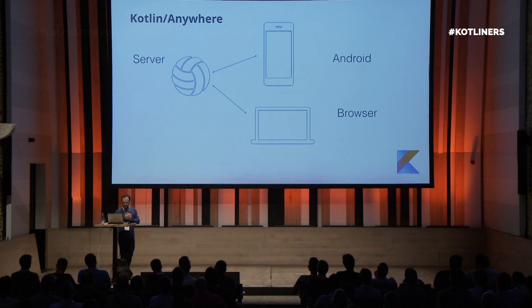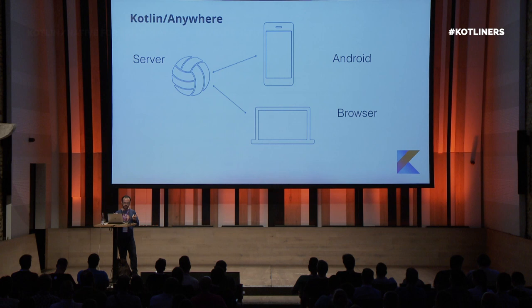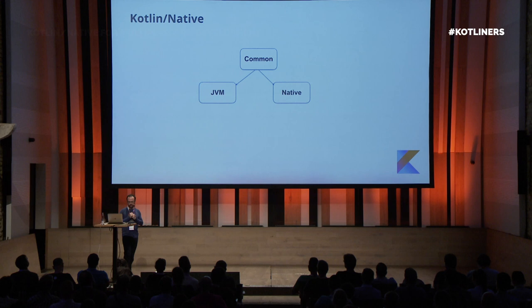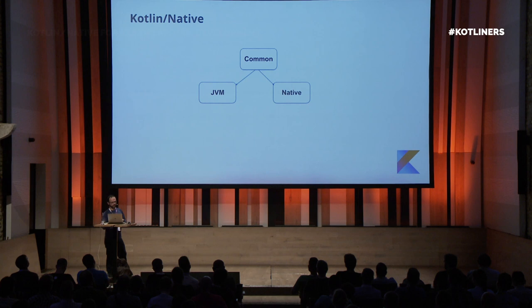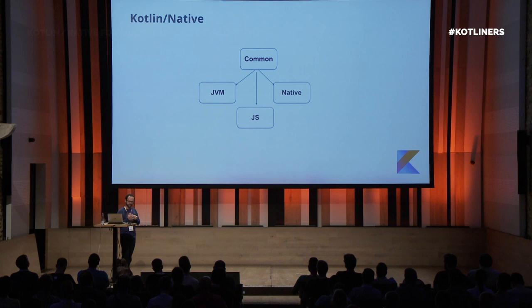Before Kotlin Native, we had something called Kotlin Anywhere — that was the primary idea. The idea was that we would be developing on server and deploying on Android and the browser. Now JetBrains pushed it further into what we call Kotlin Native. We would have a common module containing the actual definition of the functionality, and a JVM and a native module, and of course JS — JS is transpiled, it doesn't compile directly. For mobile developers, you'd generally have an iOS and Android application, with the native module compiling into an iOS framework that can be inserted into your Xcode project.